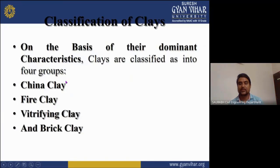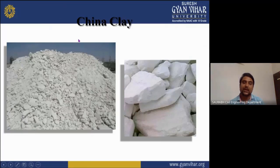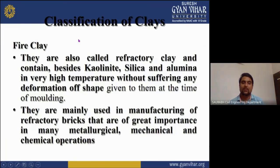On the basis of their dominant characters, clays are classified into four groups: china clay, fire clay, vitrified clay, and brick clay. China clay is the purest type of clay, containing a very high percentage of the mineral kaolinite, represented by Al₂Si₂O₅(OH)₄. It is considered a high-grade clay and is used for the manufacturing of crockery and other porcelain wares. This is the image of china clay, which is very useful for making clay products.